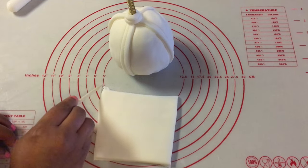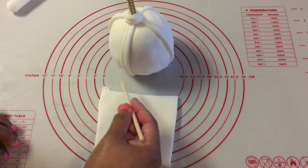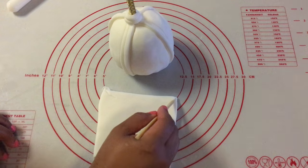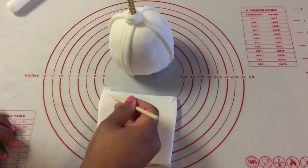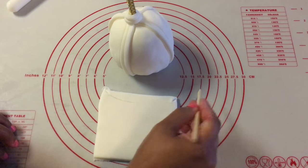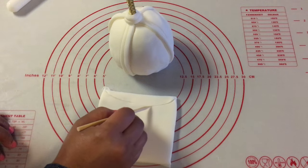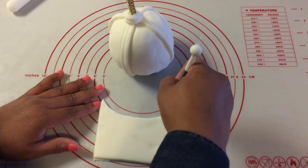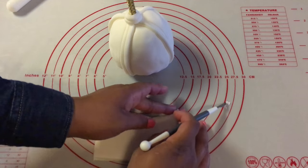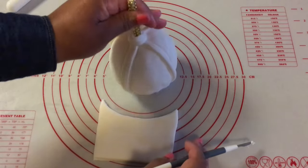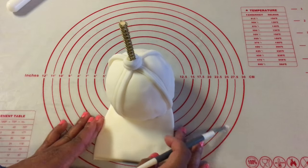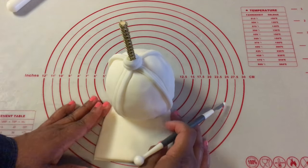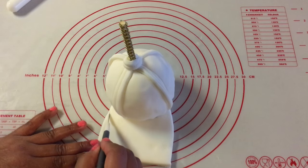So I am going to use this first red line right here to guide me as far as making my lid. You can freehand this if you want. So you bring your apple up to it. I am just going to freehand this.